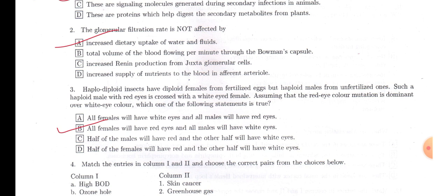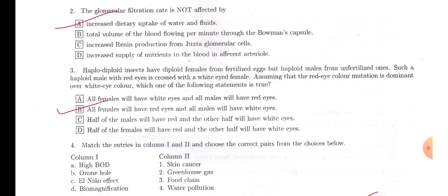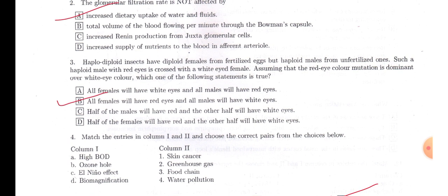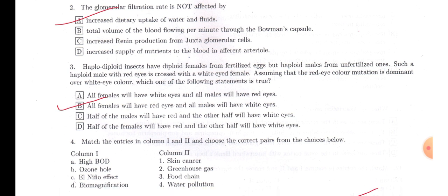See the other options: total volume of blood flowing per minute through the Bowman's capsule obviously affects the glomerular filtration rate. Increased renin production from JG cells also influences or changes GFR. Increased supply of nutrients to the blood in afferent arteriole will make high osmotic pressure within the blood, which will collect more fluid, increasing the GFR. So the first option is the answer: increased dietary uptake of water and fluid will not affect GFR.